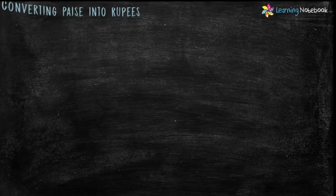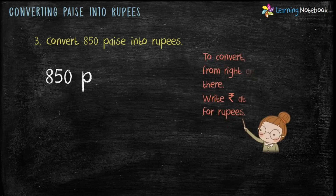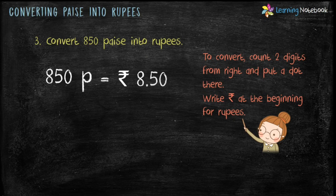Now let's see how to convert paise into rupees. Question: convert 850 paise into rupees. To convert paise into rupees, divide by hundred, or count two digits from the right and put a dot there. Here, put a dot before 50 and write Rupees at the beginning. So 850 paise equals Rupees 8.50.